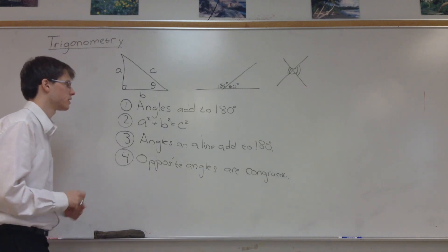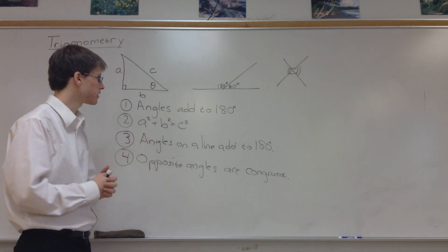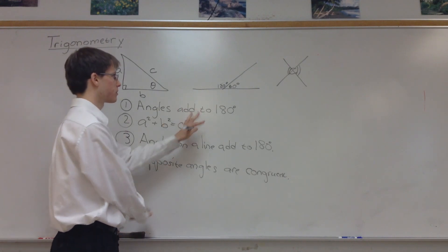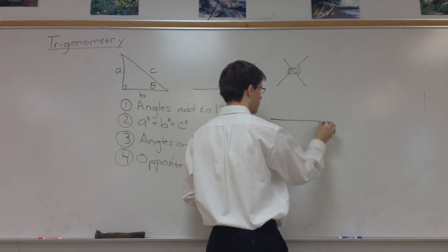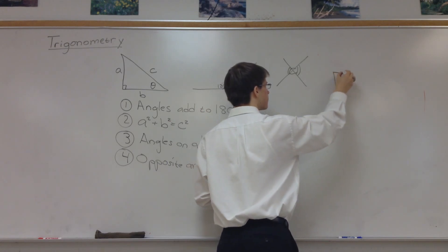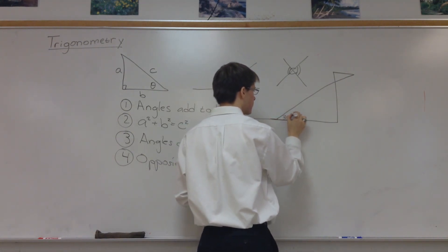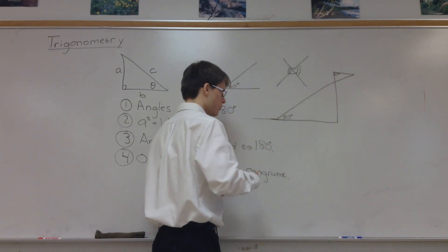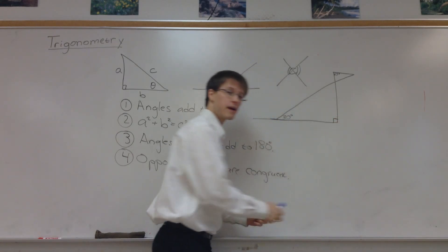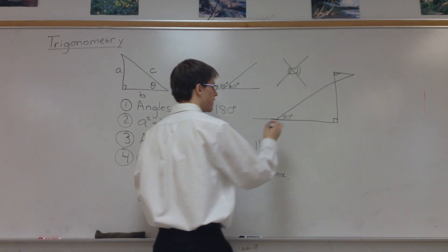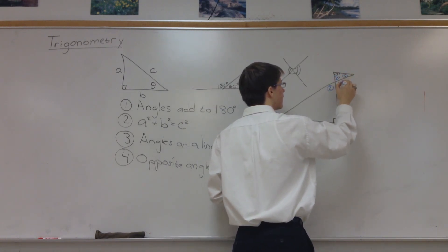Those are the four rules we'll use to guide us through geometry and trig. Before looking at trigonometric functions, let's apply some of these rules to an example. Suppose we have a drawing with a triangle where one angle is 30 degrees, another is 60 degrees in the corner, and this is a right triangle — so one angle is 90 degrees. We want to find the other angles, both inside and outside, and I'll label them 1 through 6.